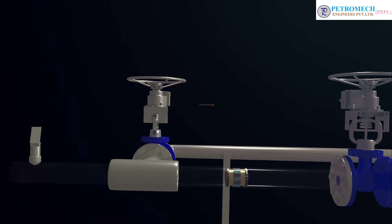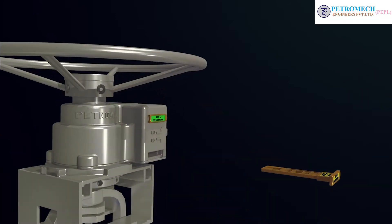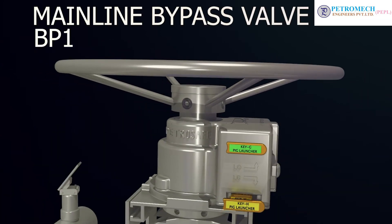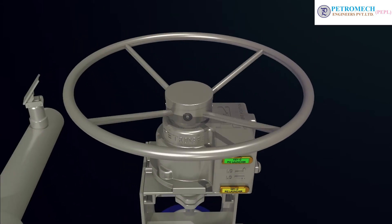After the pig is launched, insert key H into main line bypass valve BP1. Step 19: Open the valve and release key G.